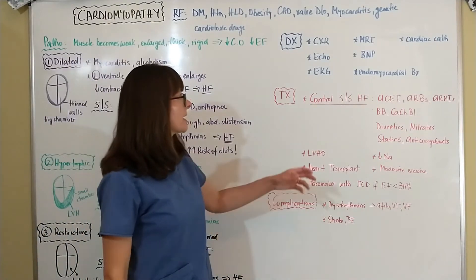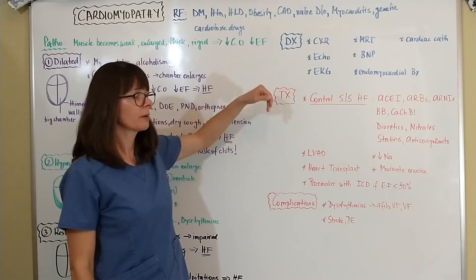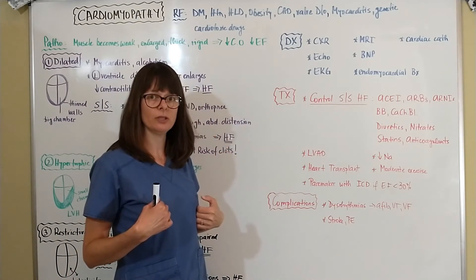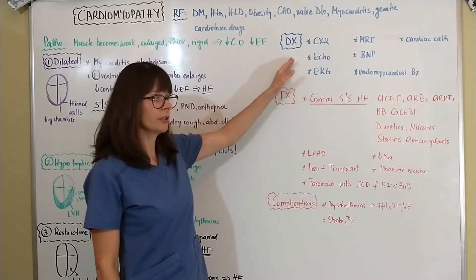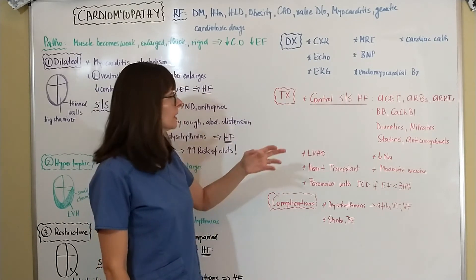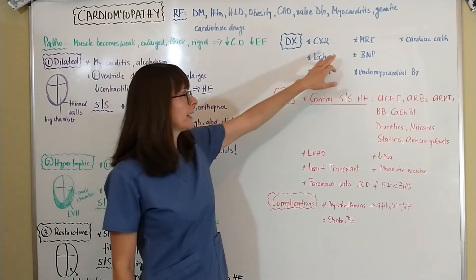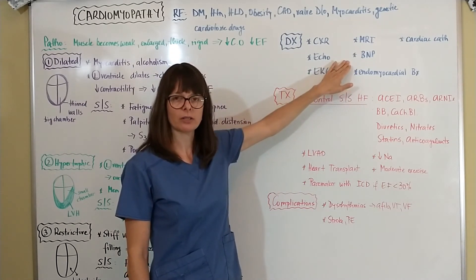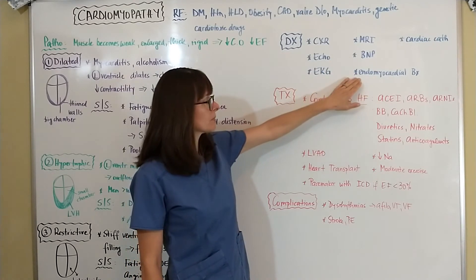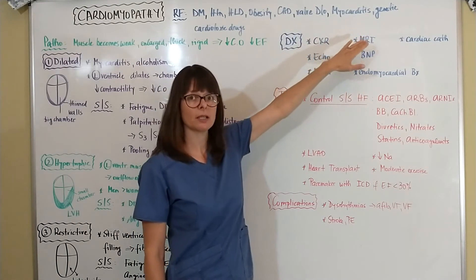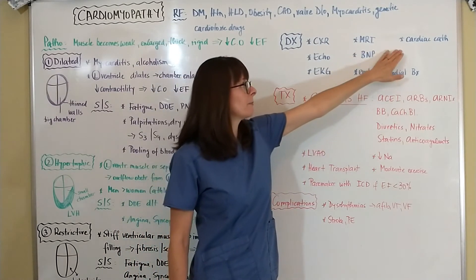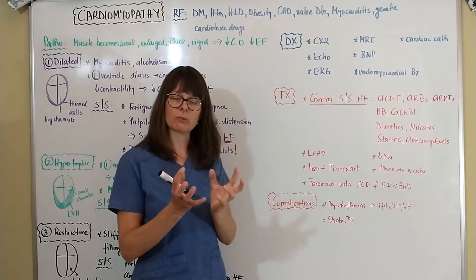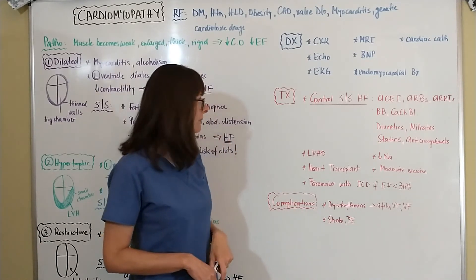Diagnostic tests for cardiomyopathy include a chest X-ray to assess cardiac enlargement and pulmonary infiltration, an echocardiogram to evaluate heart chambers and valves, and an EKG to detect dysrhythmias. A cardiac MRI evaluates structures in more detail. BNP is the cardiac marker used in evaluating heart failure. An endomyocardial biopsy may be done if myocarditis or genetic disorders are suspected, and cardiac catheterization can evaluate the heart's ability to fill and chamber volumes.